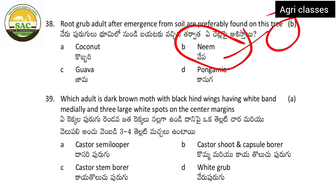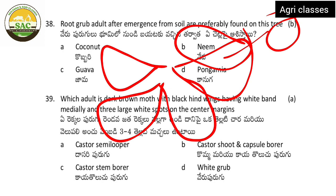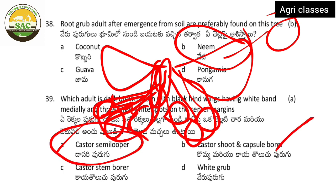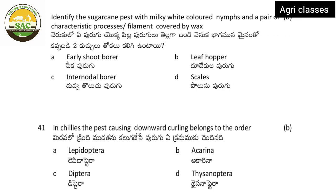Next: which adult is a dark brown moth with black hind wings having three large white spots on the center margin? The moth is dark brown with black hind wings and a white band in the middle with three large spots. The correct answer is castor semi-looper. The scientific name of the castor semi-looper is important — identify it from the description.